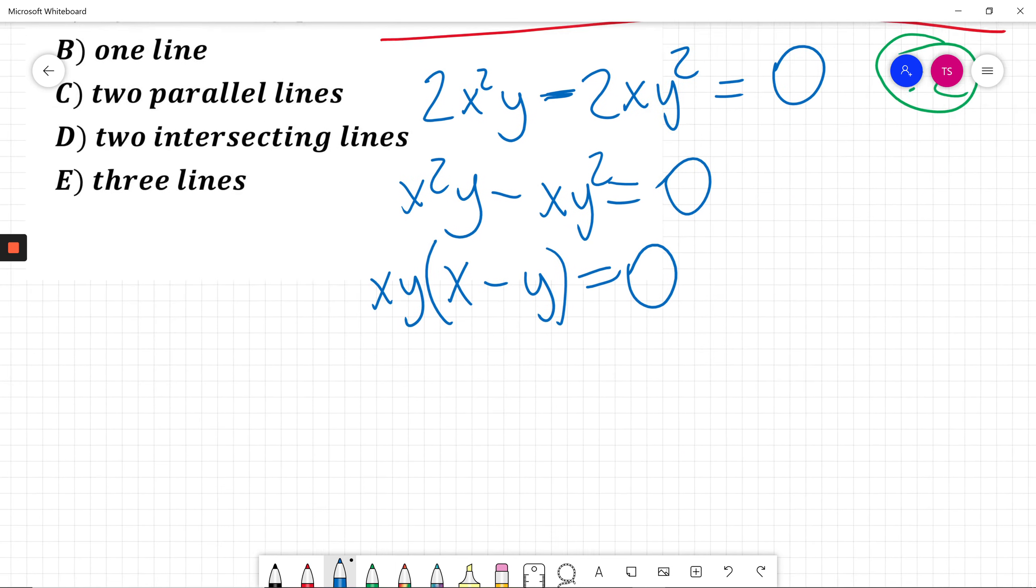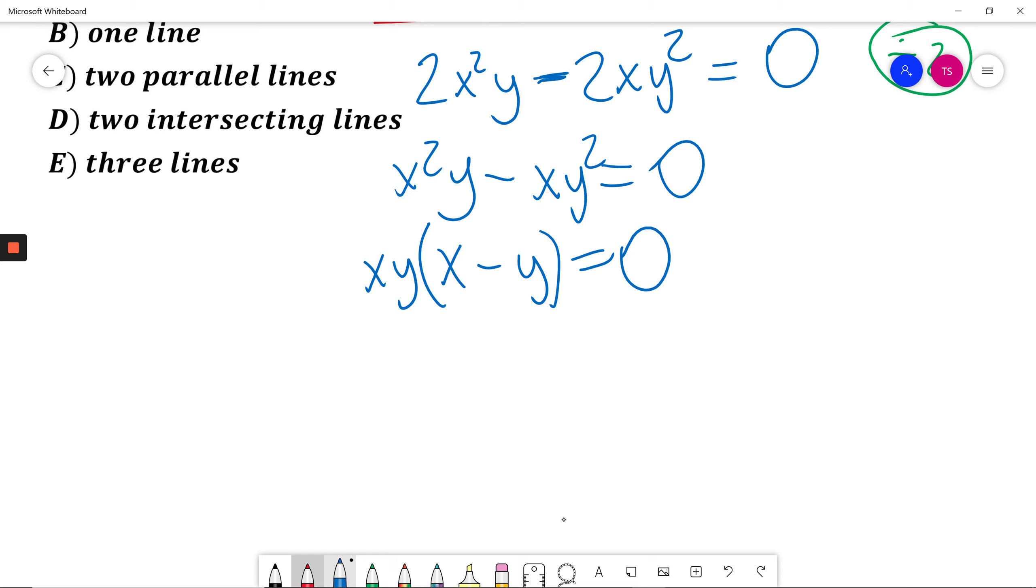When we multiply three things and get 0, we have x = 0 or y = 0 or x - y = 0.